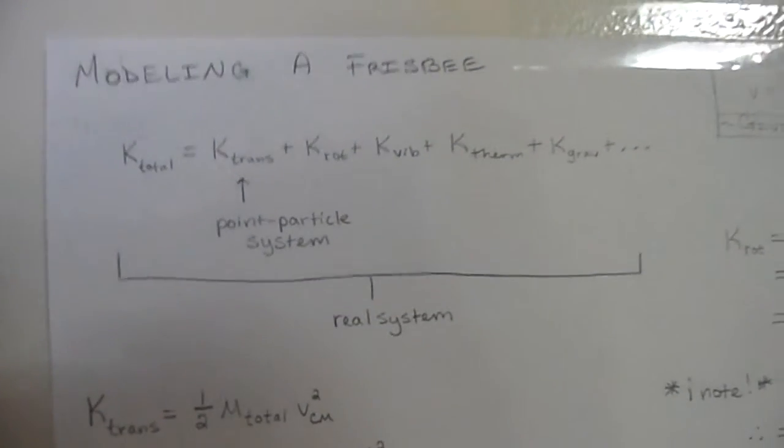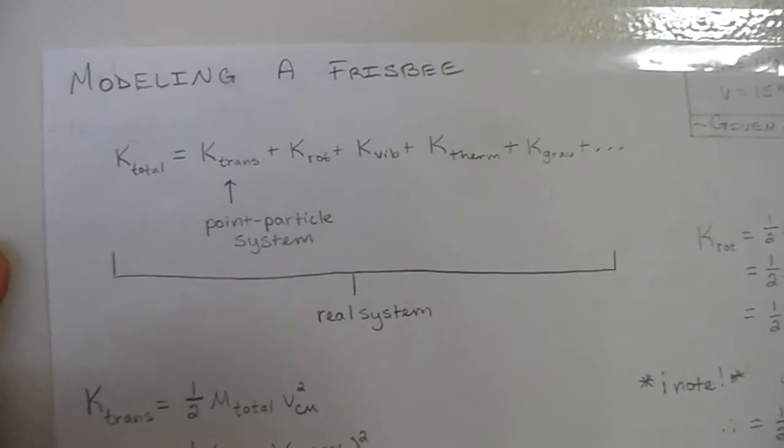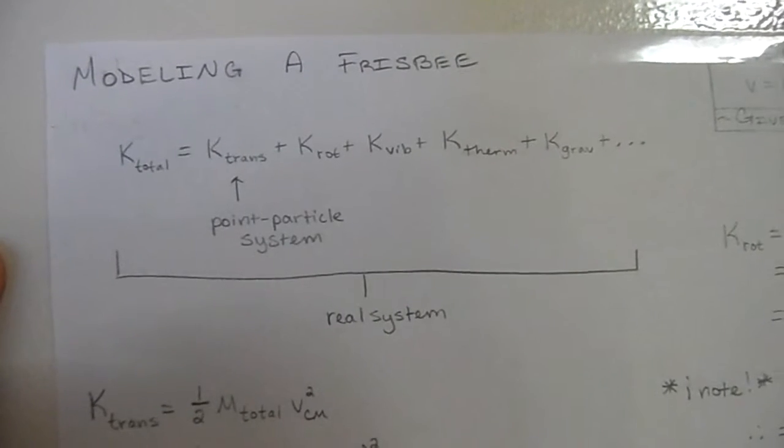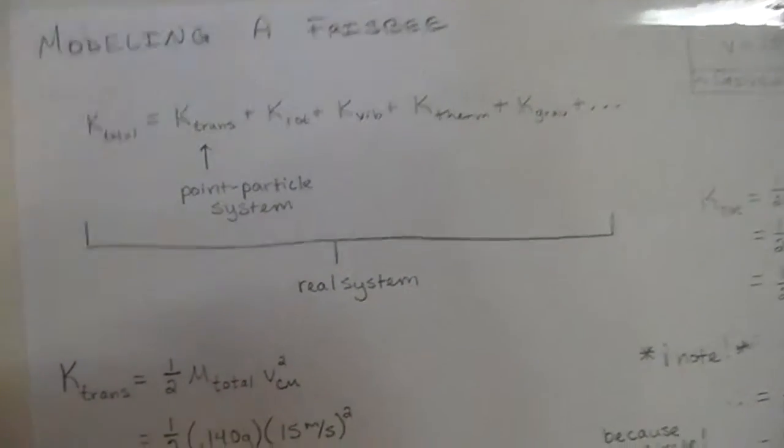Alright, now quickly here. This is modeling a frisbee. This application can be found on page 351 of chapter 9 in the text.